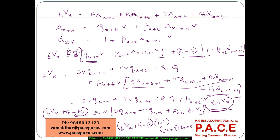This recursive relationship gives the reserve at the end of period t+1 from the reserve at time t. All the fundamentals discussed for net premium reserve computation remain similar when moving to gross premium reserve computation. The only difference is that we now consider various expenses, commissions, and bonuses which are associated with the Gross Premium but not with the Net Premium. Working through numerical examples will provide much more clarity on this.